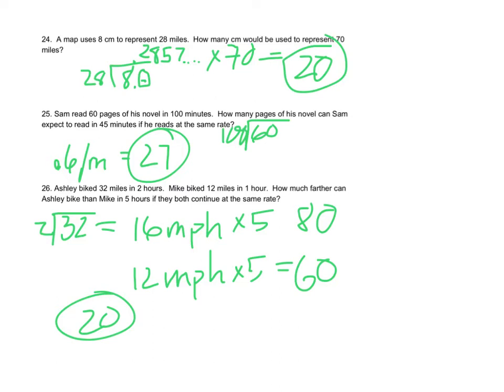Number 25, Sam reads 60 pages of his novel in 100 minutes. How many pages can Sam read in 45 minutes? We need to take 60 pages and divide by 100. That gives me 0.6 pages per minute. Then multiply 0.6 times 45, which gives me 27. So in 45 minutes, he's going to read 27 pages.